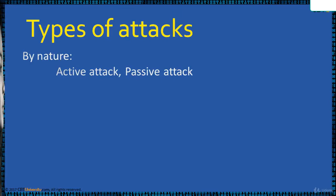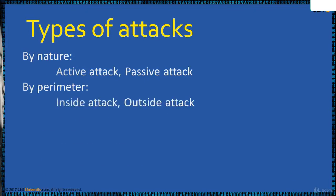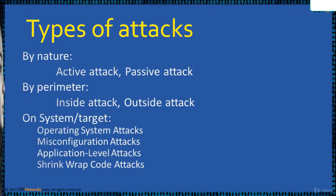Passive attacks do not modify the resources but copy or capture information. Examples: port scan, idle scan, etc. By parameter, attacks can be inside attacks or outside attacks. An inside attack is initiated inside the security perimeter, possibly by an authorized user. An outside attack is carried out by an unauthorized or illegitimate user mostly. On a system target: Operating system attacks, such as OS vulnerabilities and misconfiguration attacks; application level attacks; and shrink wrap code attacks — which is about exploiting holes in unpatched or poorly configured software.